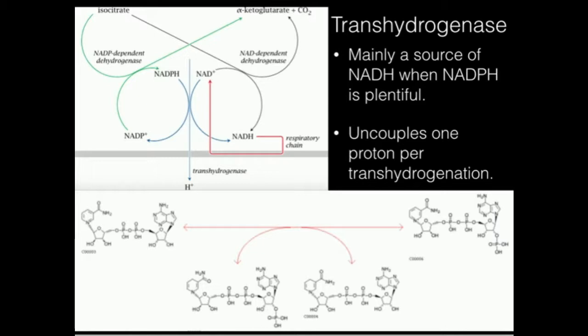In this video we're going to go over another type of uncoupling enzyme that's situated in the membrane of mitochondria, and that's called the nicotinamide nucleotide transhydrogenase. I will just call it transhydrogenase because it's really the main example in humans of an enzyme like this.